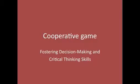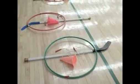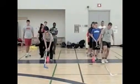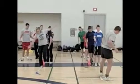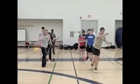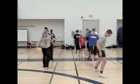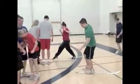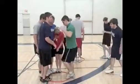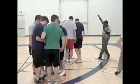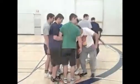Consider the following example of how a cooperative game can be used to foster decision-making and critical thinking skills. The game is called Crossing the Falls. Teammates work together to cross a large open space using only the equipment provided. If a body part touches the open space, the entire team must start again. Teammates must decide how to get everyone and the equipment safely across. The instructor can increase challenge by removing equipment. A team is only successful if everyone reaches the other side, so everyone cooperates to make decisions best for the entire group.